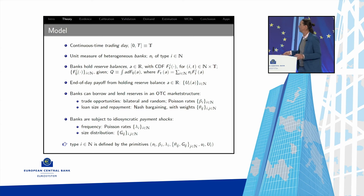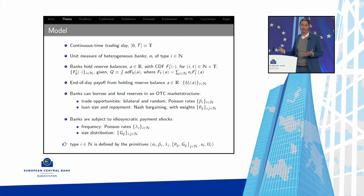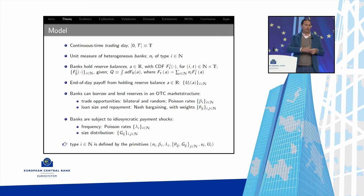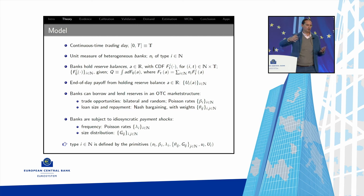We model a trading day with a large number of heterogeneous banks — in our empirical implementation, four types of banks are enough to capture the relevant richness. Banks start the day with a beginning-of-day distribution of reserve balances estimated from data. They have end-of-day payoffs encoding what happens if you end up with excess or deficient reserves — a piecewise linear function: if you're in excess you get paid the IOR; if you're in deficit you go to the discount window at a higher rate.